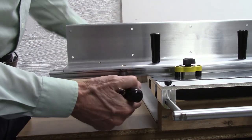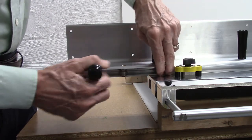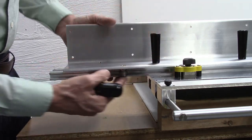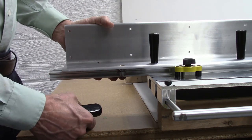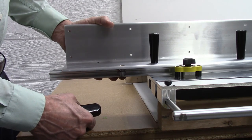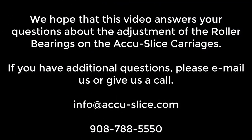And the reason we do that is because it would be impossible to adjust these roller bearings in here. But on the outside of the table, there's room down here below to get my Allen screw in there to adjust it.